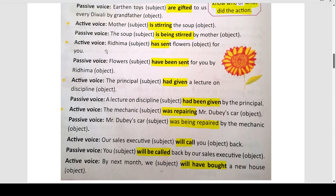Active voice: Rhythmia has sent flowers for you. Rhythmia subject, flowers object, send your verb. अब इसी को हम passive voice में interchange करेंगे — जो active voice का object है, वो sentence के beginning में आएगा हमेशा। So: flowers have been sent for you by Rhythmia.